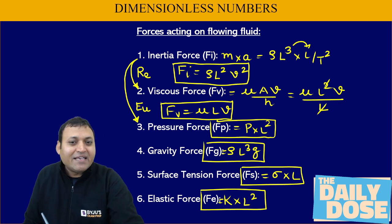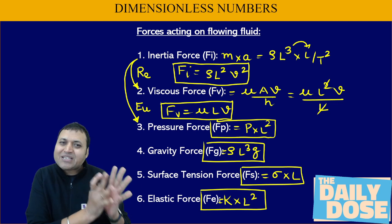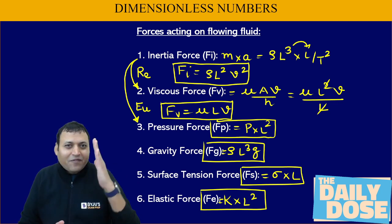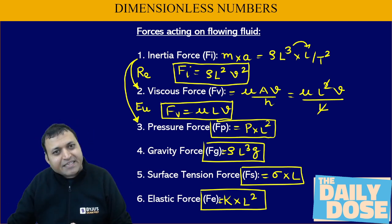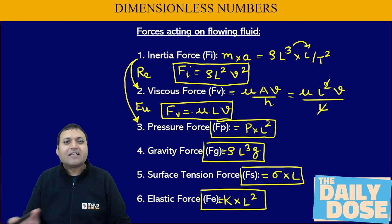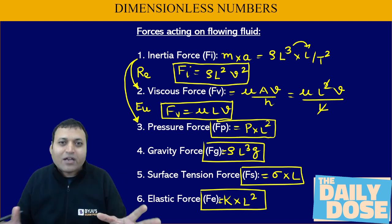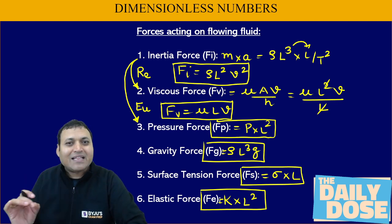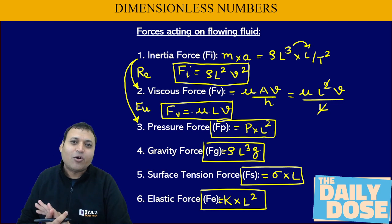How to memorize the Euler number? Euler used to be the person who was taking pressure of each and every department. You can find Euler equations in mathematics, in physics, in fluid mechanics, in strength of materials — everywhere there are Euler equations. So Euler did a lot of work in every department, meaning he used to take the pressure of every department. So when pressure force comes in the denominator, it gives the Euler number.